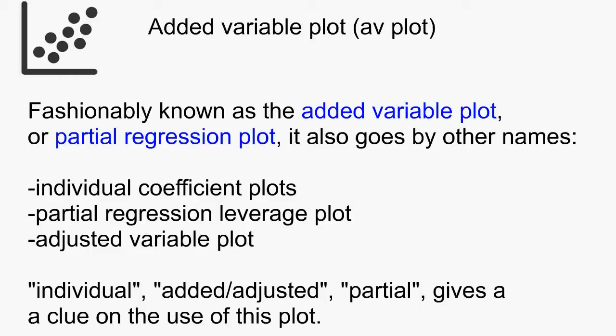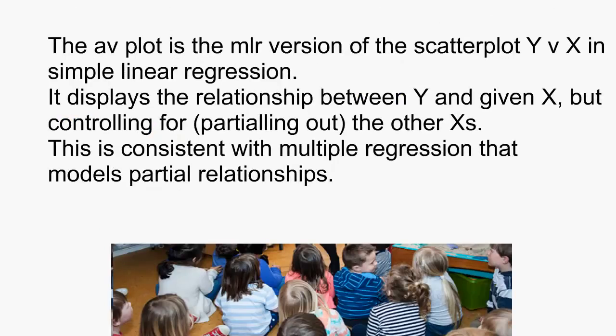Fashionably known as the added variable plot or partial regression plot, it also goes by other names. The AV plot is the MLR version of the scatter plot Y versus X in simple linear regression. It displays the relationship between Y and given X, but controlling for other regressors.